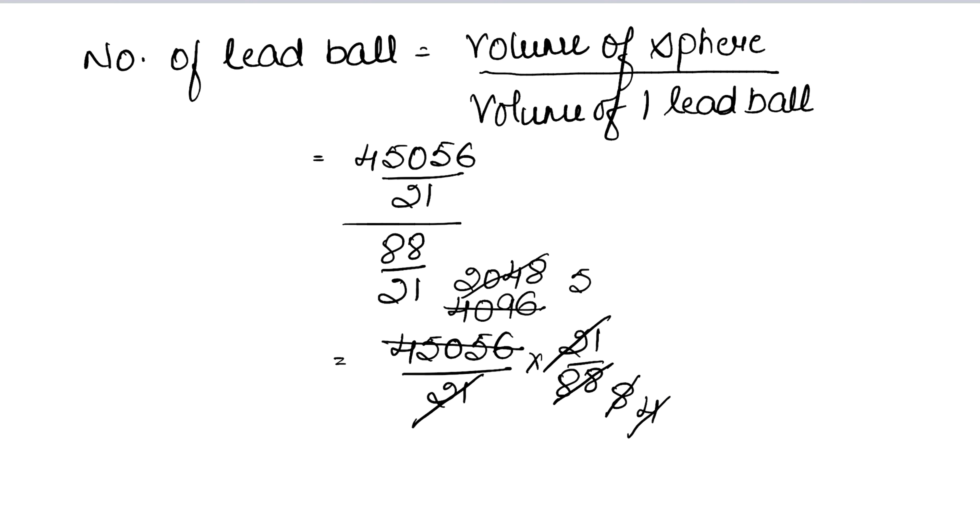Again, 4 se chala jayega. 4, 5s are 20, 4, 1s are 4, 4, 2s are 8. So how many lead balls were made from one sphere? That is, 512 is the answer.